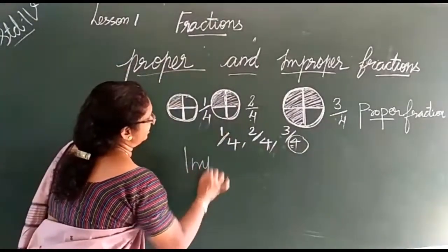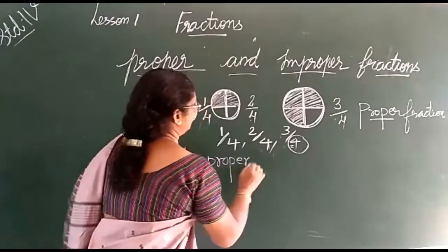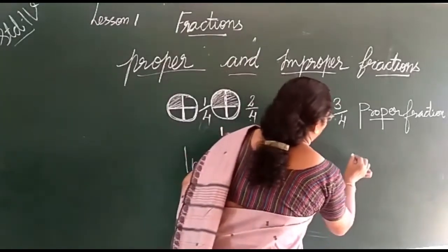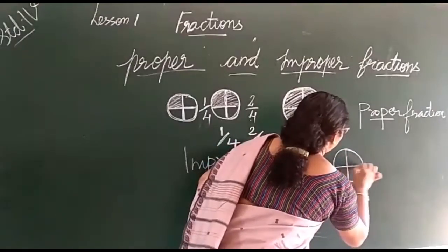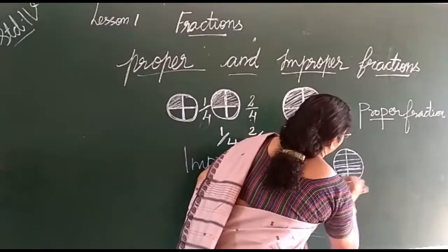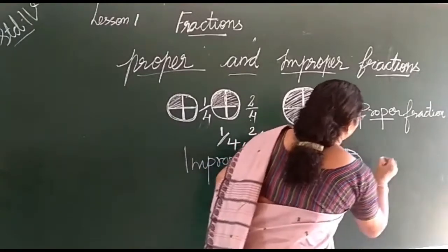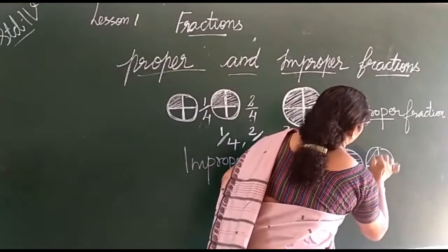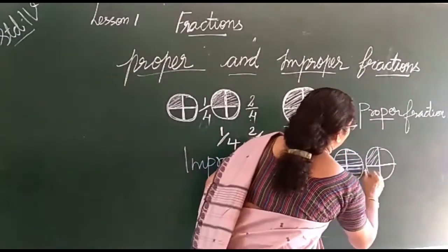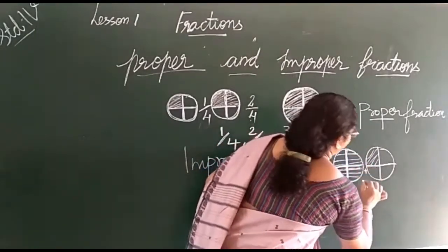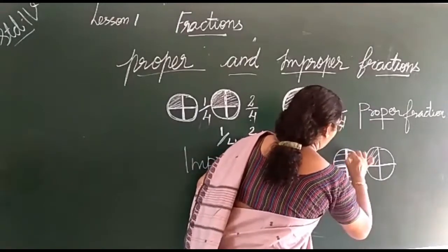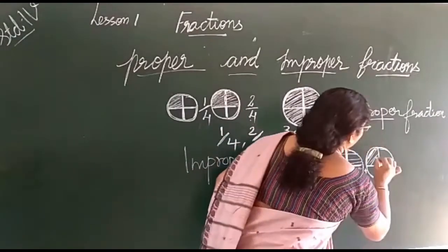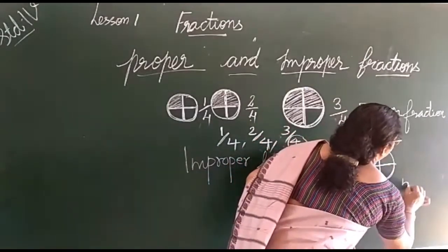What is an improper fraction? This is a circle divided into 4 equal parts — it is shaded in all four parts. It is also divided into 4 equal parts with one part shaded. The total is 4 by 4 for the full circle. Then one more side is shaded, making this 1 by 4 added. This is 5 by 4.